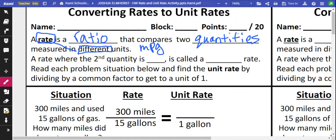A rate where the second quantity is one is called a unit rate. Read each problem situation below and find out what the unit rate is by dividing, dividing by a common factor to get a unit of one.